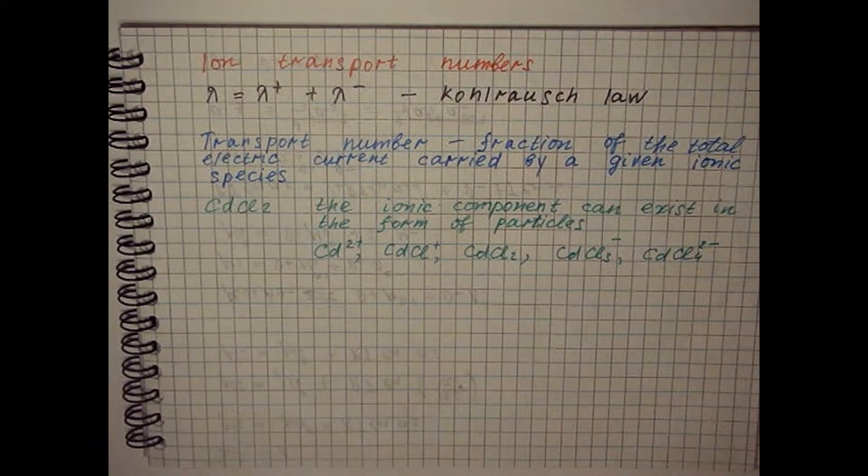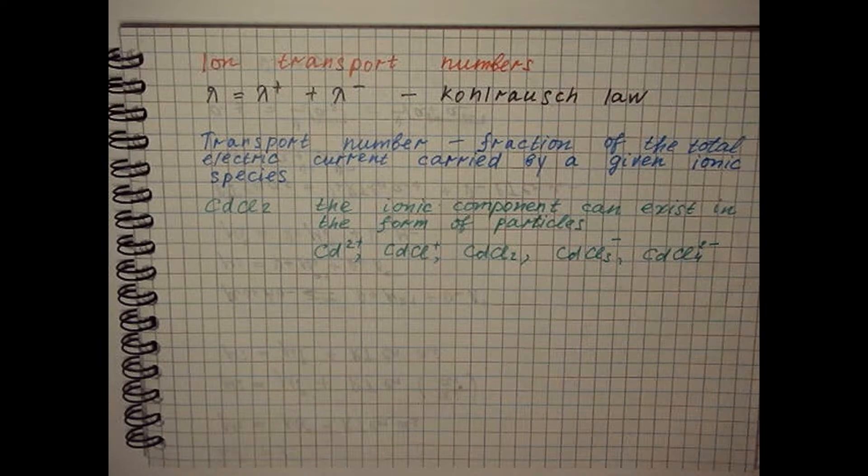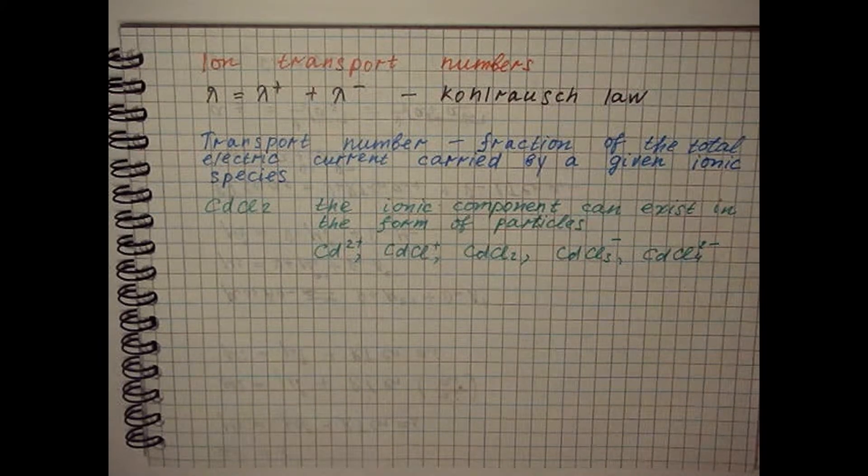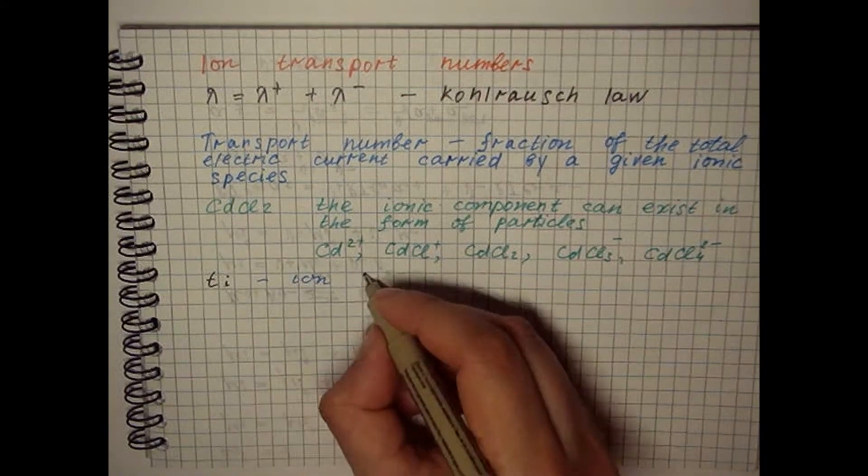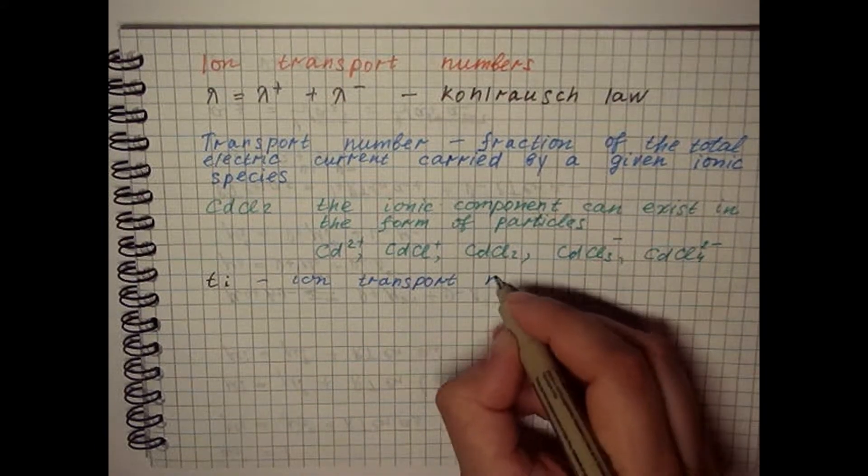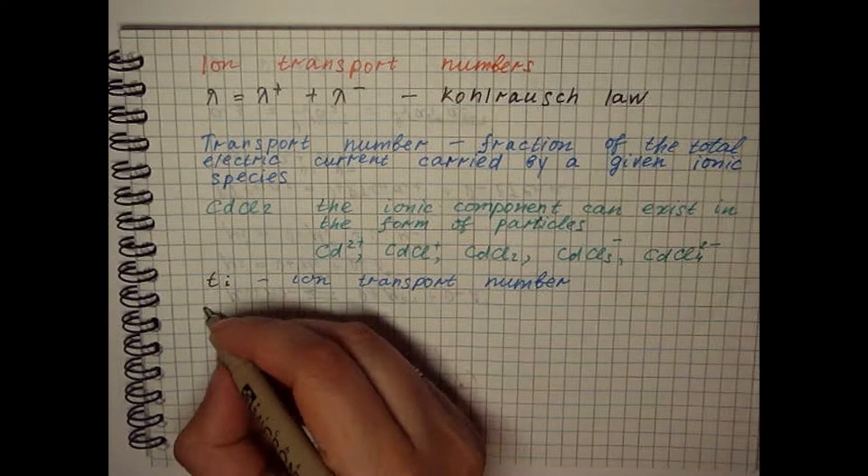All these particles during the electrolysis of a solution of cadmium chloride will move to the cathode and transfer electric current. Therefore, the transport number of the ionic component is always determined experimentally.